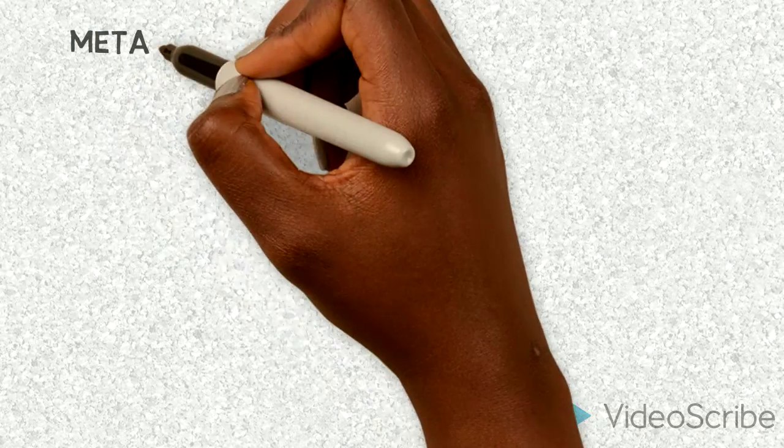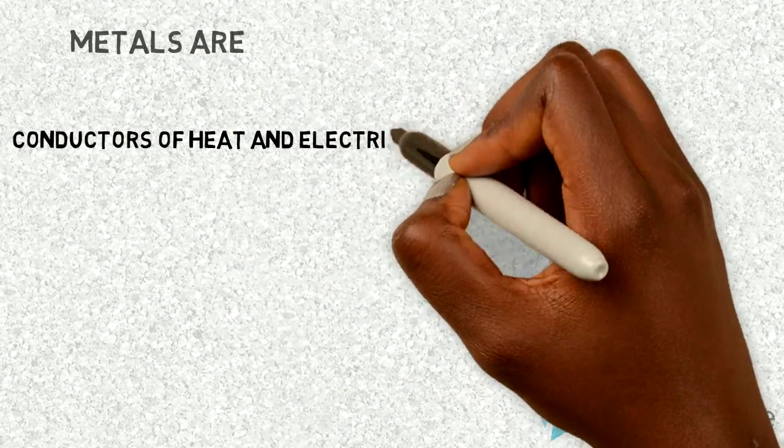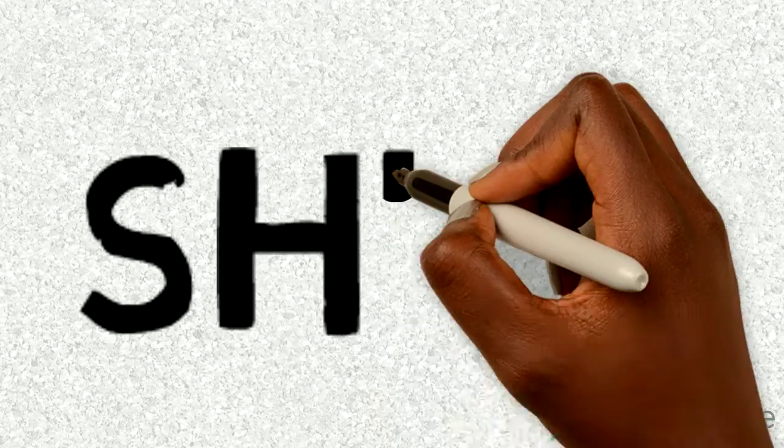Since the ions don't repel and are engulfed in the sea of electrons, metals are good conductors of heat and electricity, they are ductile, they are shiny, and they are malleable. Goodbye and I'll see you later.